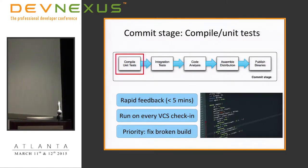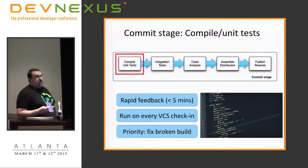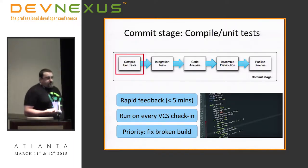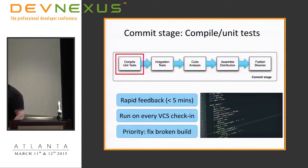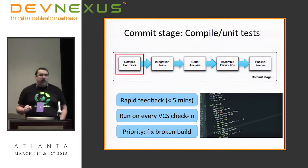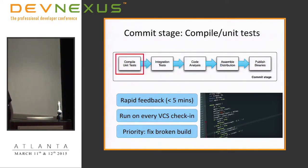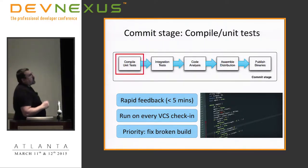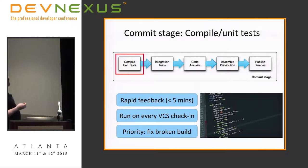Let's drill down into some of these steps. For compile and unit tests, we want rapid feedback — typically less than five minutes, with unit tests running in sub-second time. We're going to run these on every version control check-in. Every time we check something into source control, this is the entry point into our pipeline and the first thing that runs. If this is broken, it should be a priority because it means something is pretty drastically wrong with the application and it's probably affecting developers.